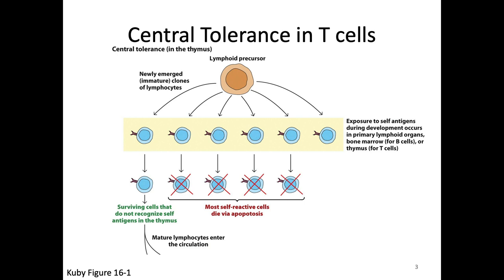We left off last time talking about central tolerance in T-cells. With central tolerance, we're dealing with self-reactivity and trying to make sure we don't release harmful self-reactive cells into the periphery. Just like we saw with central tolerance in B-cells, there are places where you can see how autoimmunity could happen if something went wrong. We're also going to review some of that B-cell information a little bit later today.